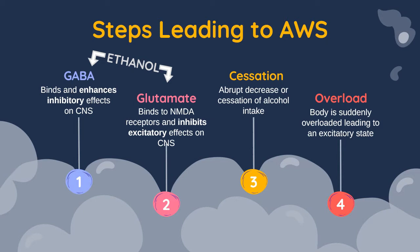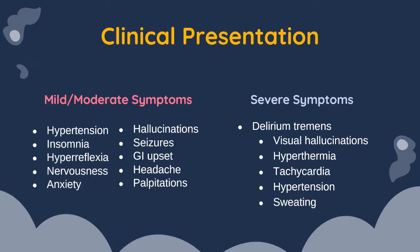When cessation occurs, or there is an abrupt decrease of alcohol intake, your body is no longer inhibiting the excitatory effects on the CNS. You become overloaded, which leads to an increased excitatory state — a hyper-excitatory state. This presents in varying degrees.